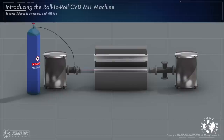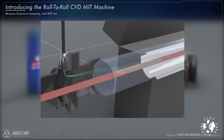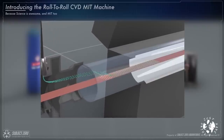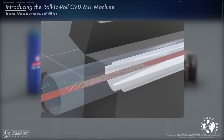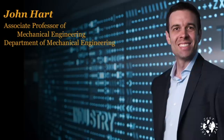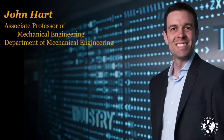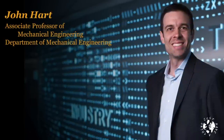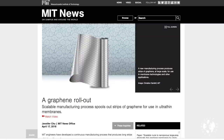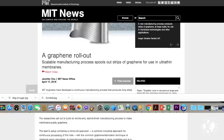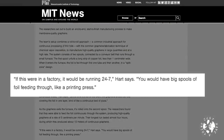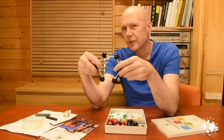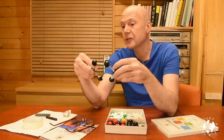Not in nice sheets, but in relatively large quantities compared to what had been achieved previously — so at least a step in the right direction. Then a team from MIT announced in April 2018 that they'd developed a continuous manufacturing process that produces long strips of high-quality graphene, feeding foil continuously through the system at a rate of five centimeters a minute. John Hart, Associate Professor of Mechanical Engineering at MIT, said: 'If this were in a factory, it'd be running 24/7 — you'd have big spools of foil feeding through like a printing press.'